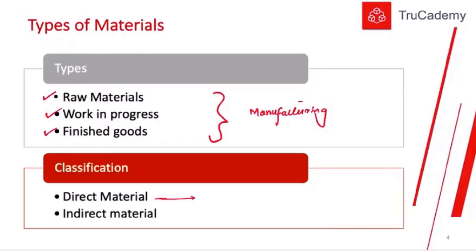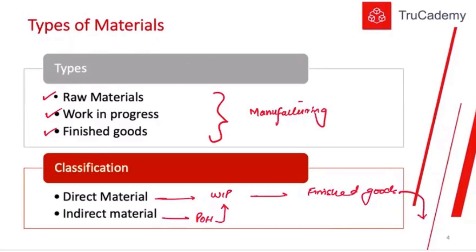Direct material is charged directly to work in progress and then moves to finished goods. Indirect material first goes to the production overhead account, then moves to WIP, and ultimately becomes part of finished goods. When we actually sell our finished goods, we charge the cost of those finished goods to cost of goods sold, and cost of goods sold is an expense in our profit and loss account.